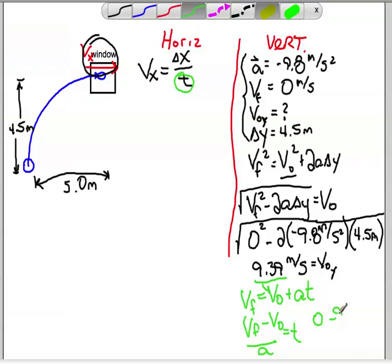I'm going to get 0 minus 9.39 meters per second divided by negative 9.8 meters per second squared. My acceleration due to gravity is equal to time.